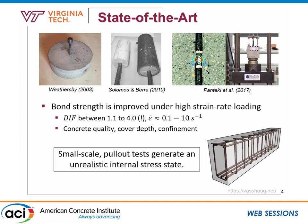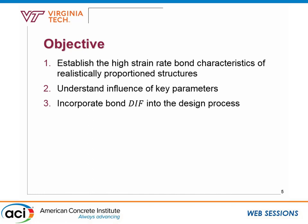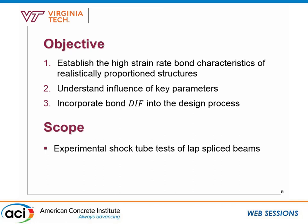This leads us to the objective. What I'm presenting today is a highlight of about four years of work — a narrow piece of it. We're trying to establish the effect of high strain rate bond characteristics in realistically proportioned reinforced concrete structures, understand the influence of key parameters on reinforced concrete bond, and incorporate some rational methodology into our design processes. The scope focuses primarily on experimental shock tube tests to answer these research questions.